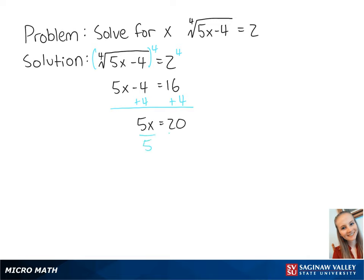To isolate x, we can divide both sides of the equation by 5, giving us x equals 4.